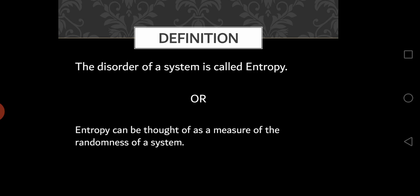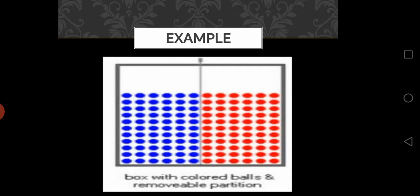Clausius explained and defined entropy as the disorder of a system, or entropy can also be thought as the measure of randomness of a system. So we can say that the randomness or the disorder of the system can be considered as entropy.